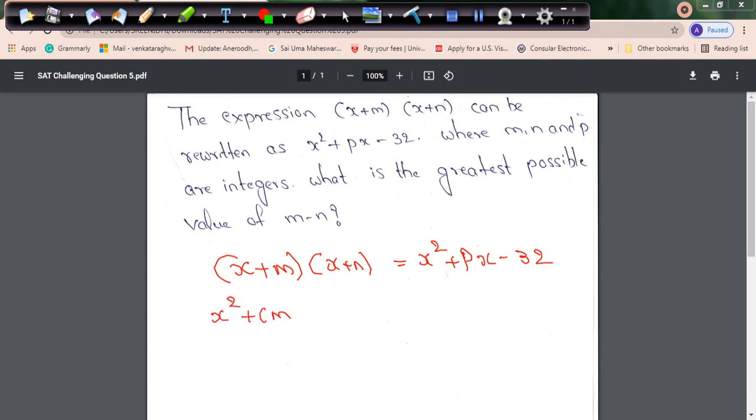It's not required to do all this, I can directly say that MN is equal to minus 32. Just to make you understand, I'm explaining all this. So we clearly know M into N is minus 32. Let me see different possibilities where M and N are integers.